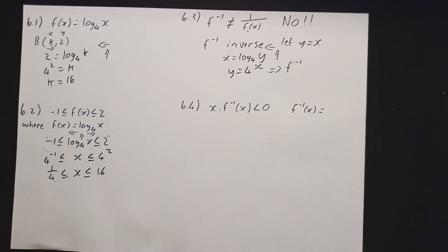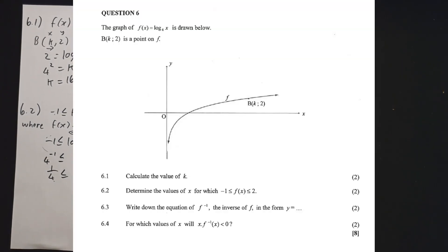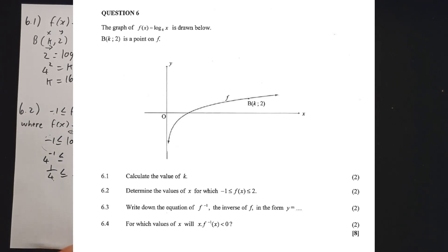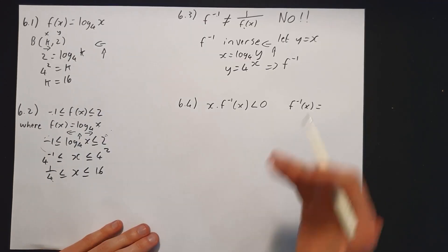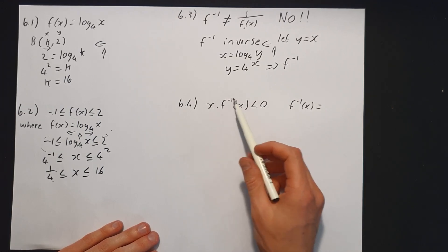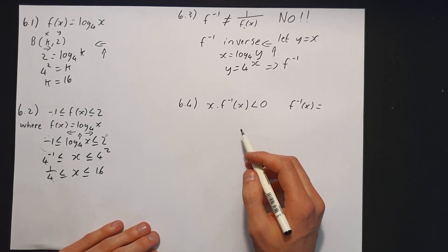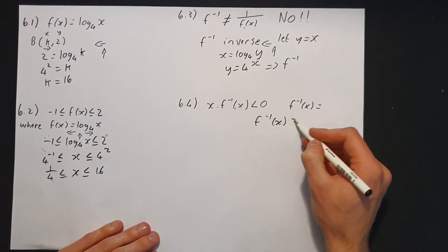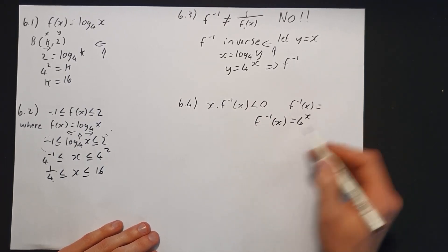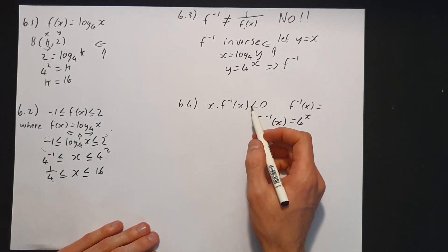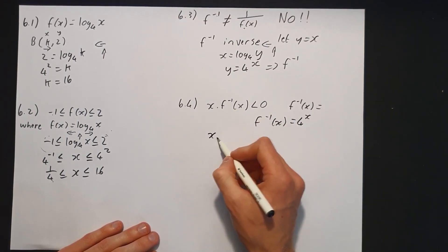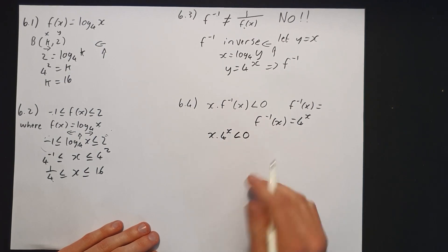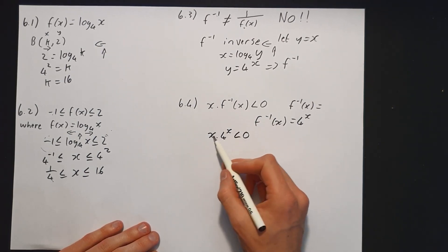Now the last question, 6.4, says for which values of x will x times the inverse be less than 0. We don't have a picture of the graph of the inverse of f, so we're going to solve this algebraically. We know that f⁻¹(x) = 4^x. So what they're asking here is where is x × 4^x < 0. We can see that if x = 0,